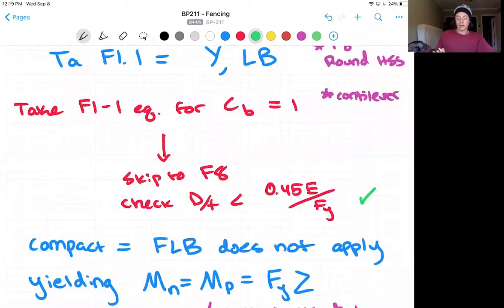Final note here is that because it's a compact member, you can see that flange local buckling or local buckling does not apply. So we only have one check to make, which is our yielding. Our equation, as you can imagine, is just truly checking the strength of steel for yielding.